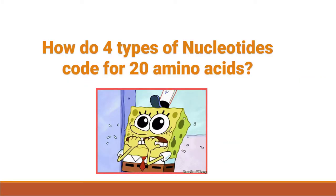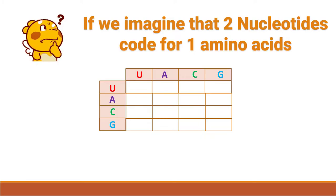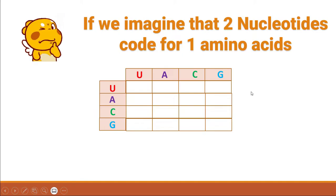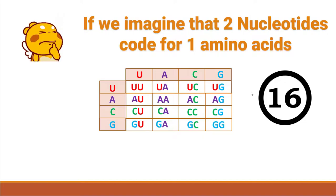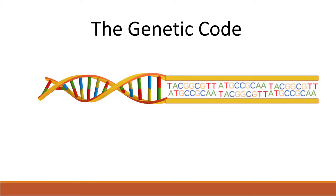The question is: how do four types of nucleotides code for 20 amino acids? If we imagine that two nucleotides code for one amino acid, let's see how many codes are generated. In this table, the four different nucleotides are placed on the left side and the top, showing all possible two-nucleotide codes — and we get only 16 different codes, which is not enough for 20 amino acids.